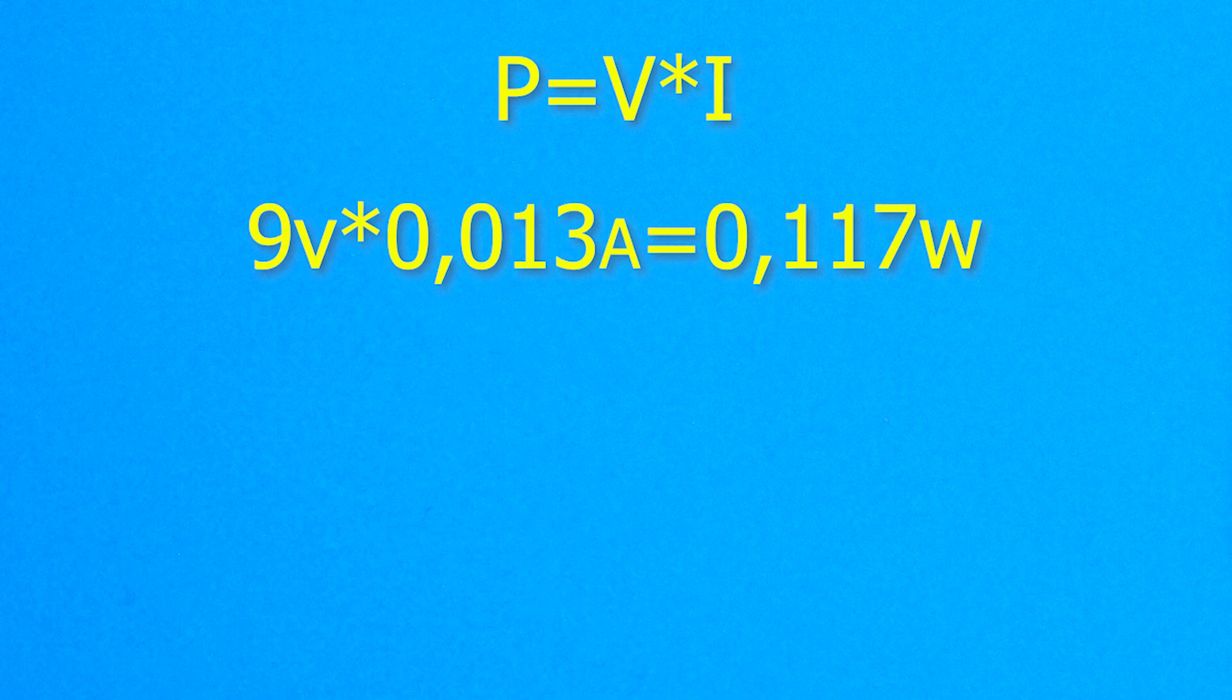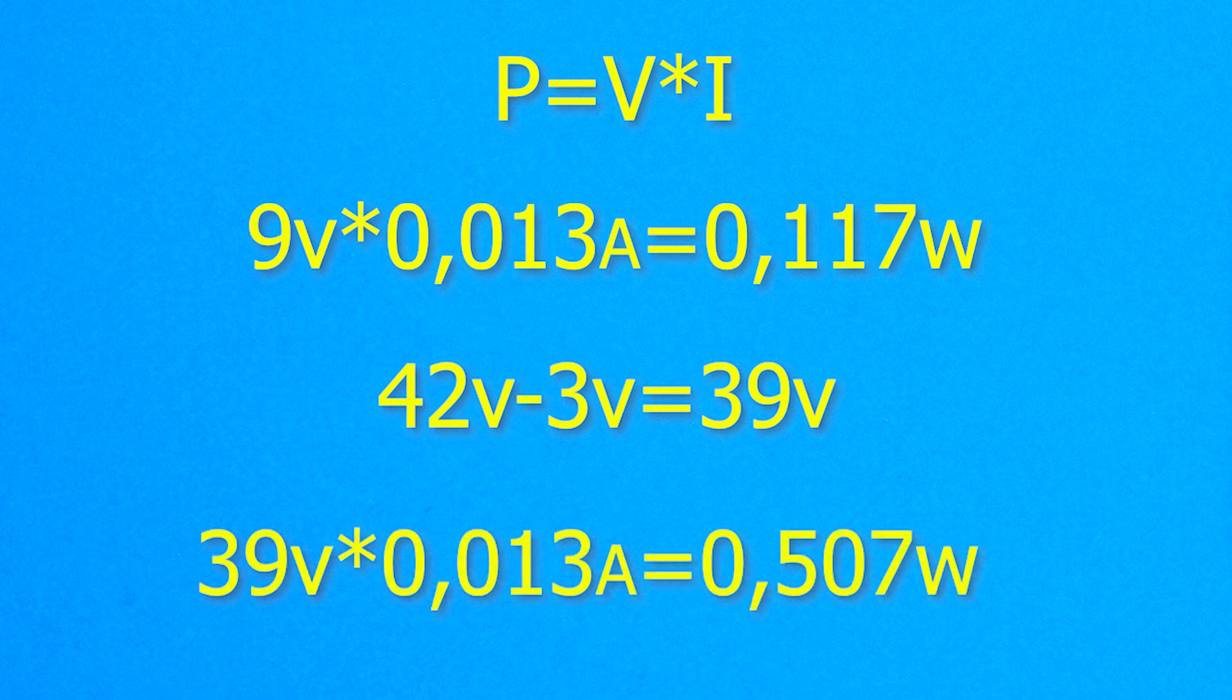But if the supply voltage is much higher, for example 42 volts, and the LED will be the same 3 volt, then 39 volts will have to be extinguished. We multiply 39 by 0.013 amps, and we get a power of 0.5 watts.